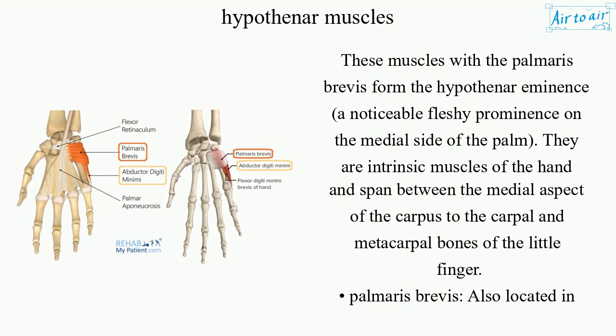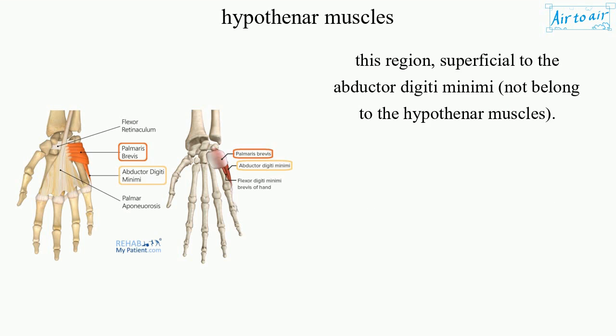These muscles, with the palmaris brevis, form the hypothenar eminence — a noticeable fleshy prominence on the medial side of the palm. They are intrinsic muscles of the hand and span between the medial aspect of the carpus to the carpal and metacarpal bones of the little finger. Palmaris brevis, also located in this region superficial to the abductor digiti minimi, does not belong to the hypothenar muscles.